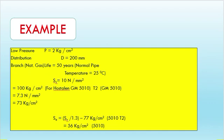An example for HDPE pipe: design pressure 2 kg/cm², diameter 200 mm, natural gas service, design life 50 years, normal pipe temperature 25°C, and SY = 10 N/mm². Using the formula T = PD / (2SA + P), you can easily calculate the HDPE pipe thickness.